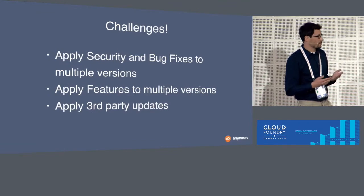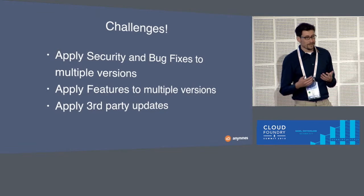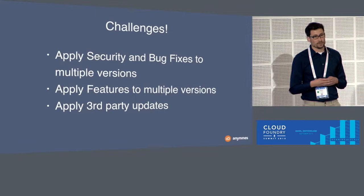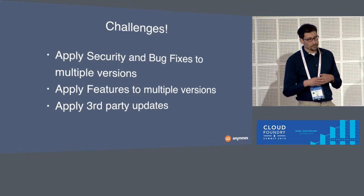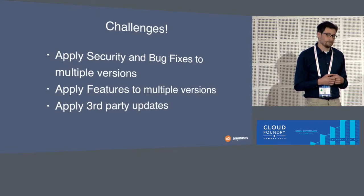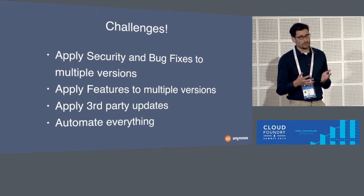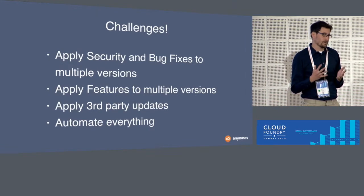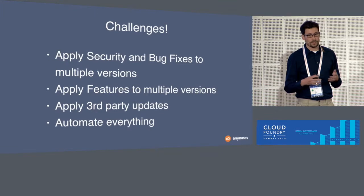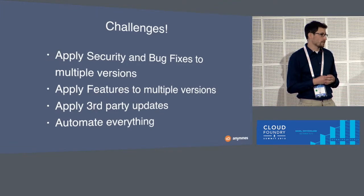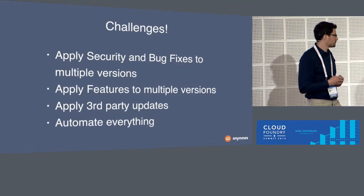If we use third-party software and they release updates — whether security fixes, bug fixes, or new features — we also need to update our third-party dependencies, and this can affect one or all service versions. You don't want to do this manually. Right now we have seven services in three to four versions, so you cannot watch each data service version and each third-party update manually. You have to automate the work, and in our case we use Concourse.